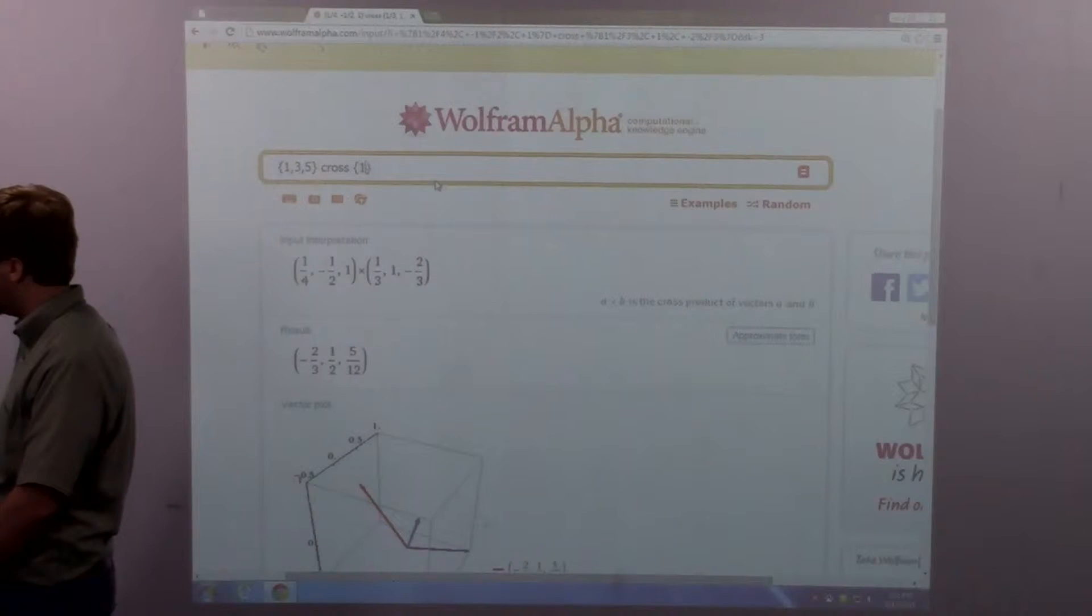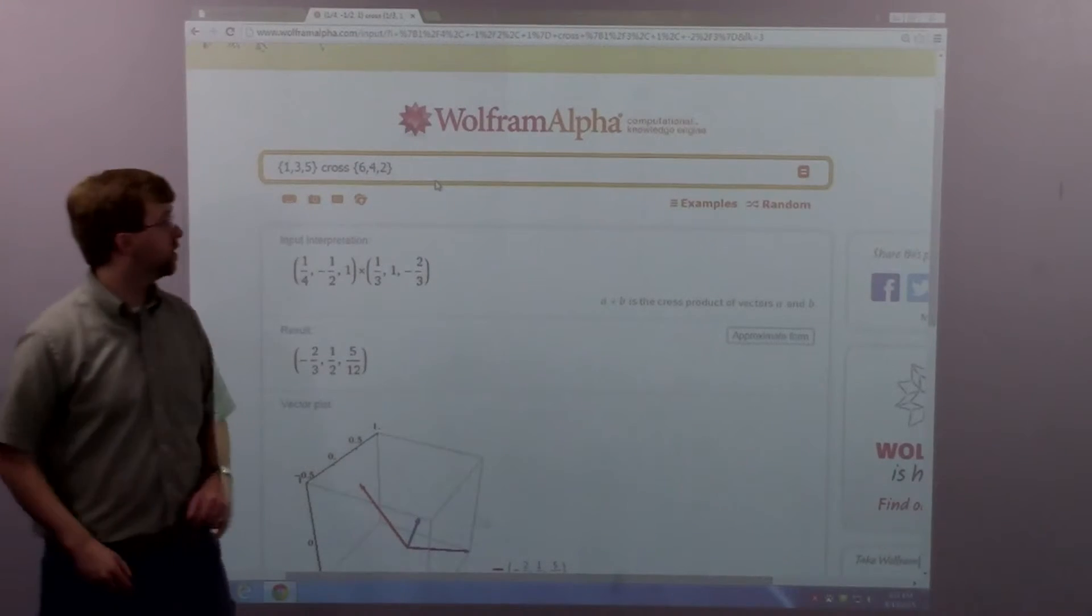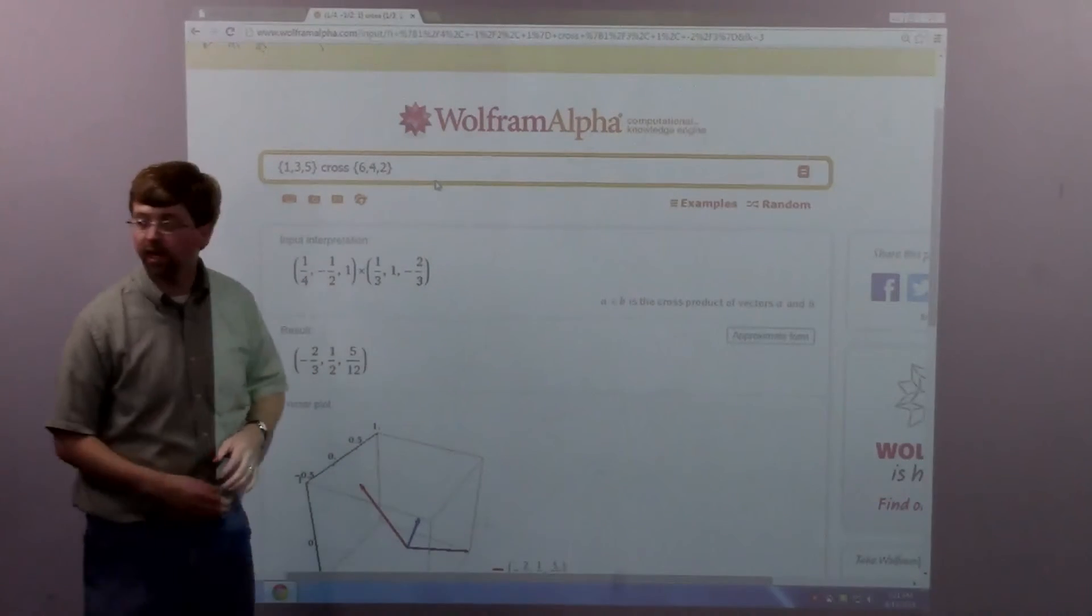And over here, it is going to be my B vector: 6, 4, 2. And you notice in Wolfram, the cross operation is the word cross there.